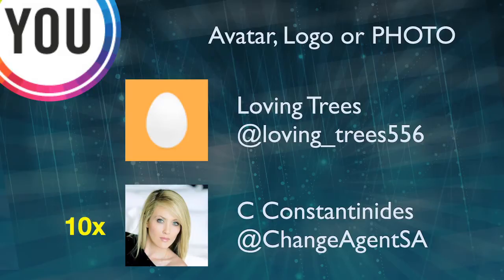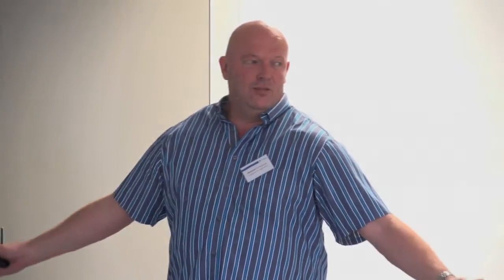If you're something like 'Change Agent SA' — if that's what you intend to do and what you show to the world, then be consistent. Be the change agent and your name can reflect that. Also, if your name is too long, Twitter doesn't give you all of it — so Catherine Constantinides had to be C. Constantinides, because Catherine Constantinides is just far too long.